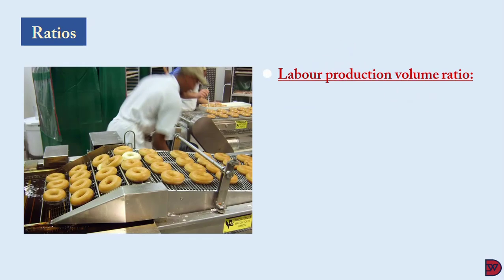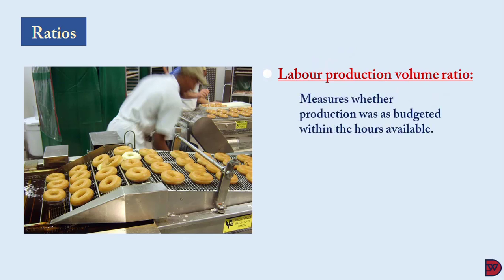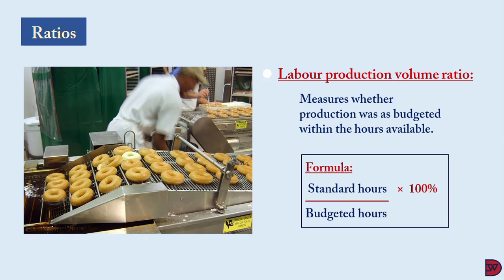Lastly, we discuss the labor production volume ratio, also known as the activity ratio. This measures whether labor has been able to produce more or fewer units compared to the budgeted outcome within the stipulated time. The formula is: expected or standard hours to make the actual output divided by the budgeted hours, multiplied by 100 percent.